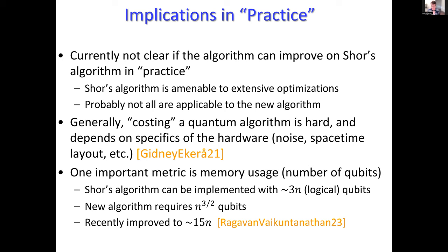In short, this is a difficult question and I'm not an expert in physical architectures of quantum computers. There's clearly an asymptotic advantage in number of gates, but there are pros and cons.